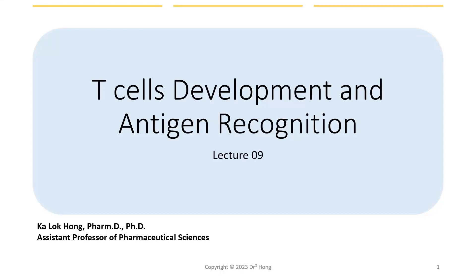Hi everyone, welcome back to the 9th lecture in the Immunology Series. Last time we looked at how B cells achieve their diversity and the structural properties of antibodies. In this lecture, we are switching gears back to cellular immunity again, and taking a closer look at how T cells develop and recognize antigens. This lecture has a lot of ties with lecture 6 that we discussed two weeks ago, so keep that in mind.